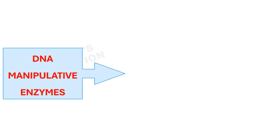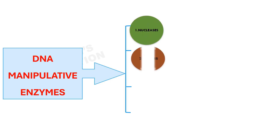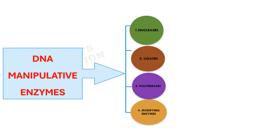Most of the enzymes involved in genetic engineering or recombinant DNA technology are known as DNA manipulative enzymes because they are involved in the manipulation of DNA molecules — that means cutting, joining, and modification of DNA. There are four major classes of DNA manipulating enzymes: nucleases, ligases, polymerases, and modifying enzymes.